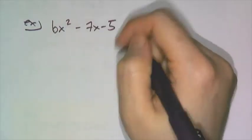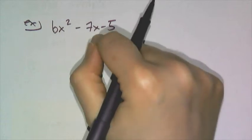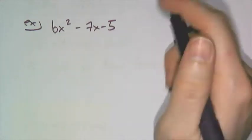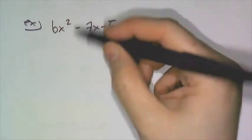So now let's try this example here, 6x² minus 7x minus 5. This is another quadratic trinomial, which is most of the kind of things you have to factor in Algebra 1.